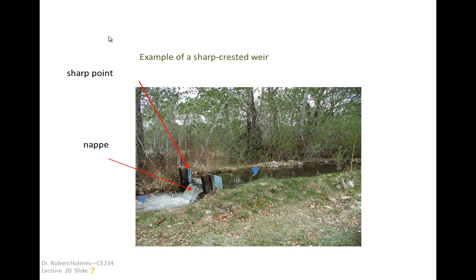Here's a picture of an old sharp-crested weir at a USGS gauging station in Maryland. You can see a pool upstream, a piece of sheet metal held up by two 6x6 posts. This is a rectangular contracted weir — the nappe is springing forward with air underneath. This is a fairly accurate way to get a stage-discharge relationship, so long as you observe the stage and know the geometry of the weir. During a flood with water going around the weir, you'd need a different rating approach.